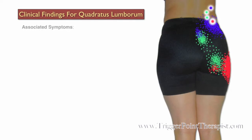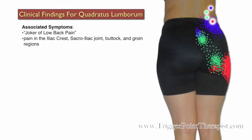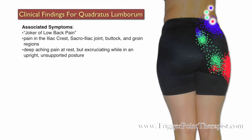Clinical findings for trigger points in the quadratus lumborum muscle: Dr. Travell refers to this muscle as the joker of low back pain because it is very frequently overlooked as a source of lower back pain. Clients may complain of pain in the iliac crest, sacroiliac joint, buttock, and groin regions. They will complain of a deep, aching pain at rest, but it is excruciating while in an upright, unsupported posture.